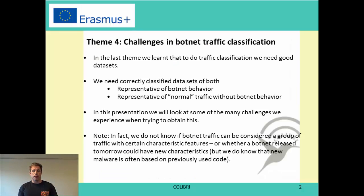In the last theme we learned that in order to do traffic classification we need good datasets. What we need is correctly classified datasets that are representative of botnet behavior, covering different botnets and different kinds of botnets, and also representative normal traffic without botnet behavior. But what is representative normal traffic? University network traffic differs from a company network, which differs from an ISP or a mobile provider. So this is not so easy.